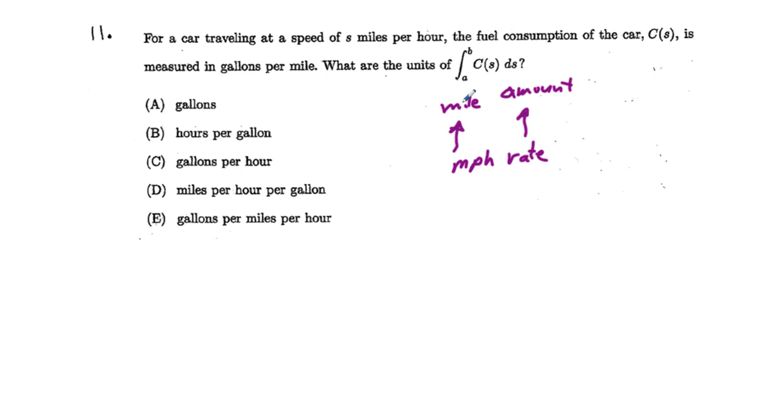In this case, we have gallons per mile, and when we integrate, we are not going to be per anything, we're going to be an amount. The amount is the integration of a rate. What we have is answer A. The integration of a rate is an amount. There will be no per. We started with per, and so our integration is not going to have a per. It's just going to be an amount. Answer A is the only answer that qualifies.